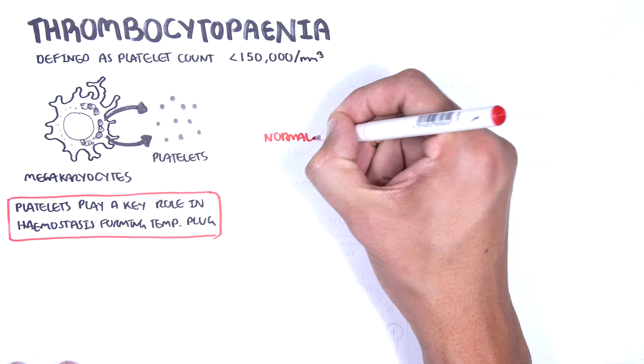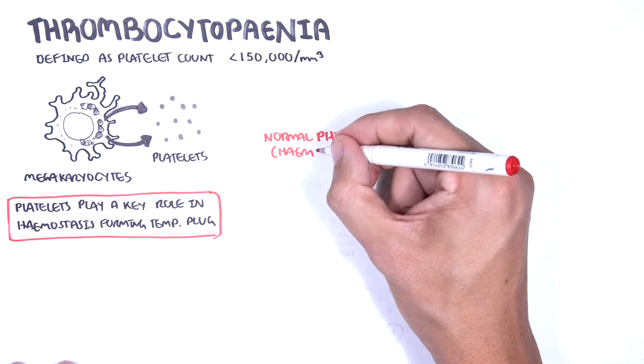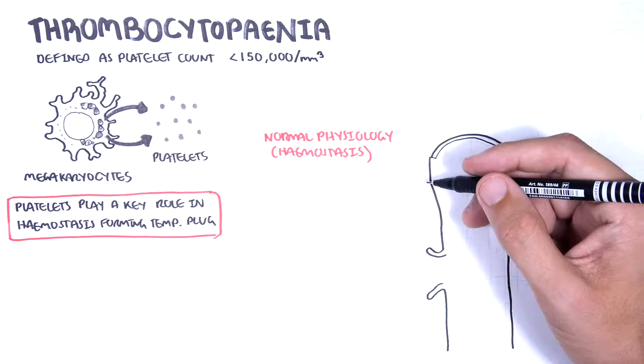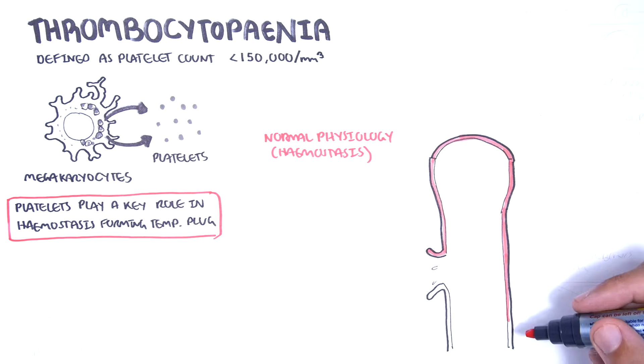In order to understand platelet function, we need to revise hemostasis. Hemostasis involves three main phases: vasoconstriction, platelet plug formation, and coagulation.